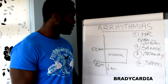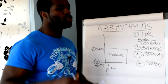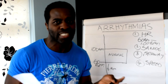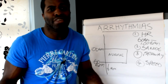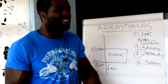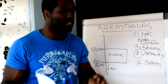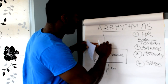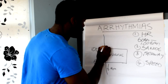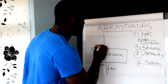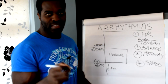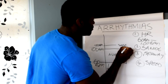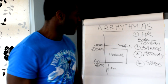You hear a lot of terms — atrial flutter, atrial fibrillation, paroxysmal — and it gets confusing when you open the BNF. I'm going to make it easy. We've established our normal range. Now, if the heart rate goes slightly above 100 — say to about 150 beats per minute — that's what we call simple tachycardia. Just a simple tachycardia.